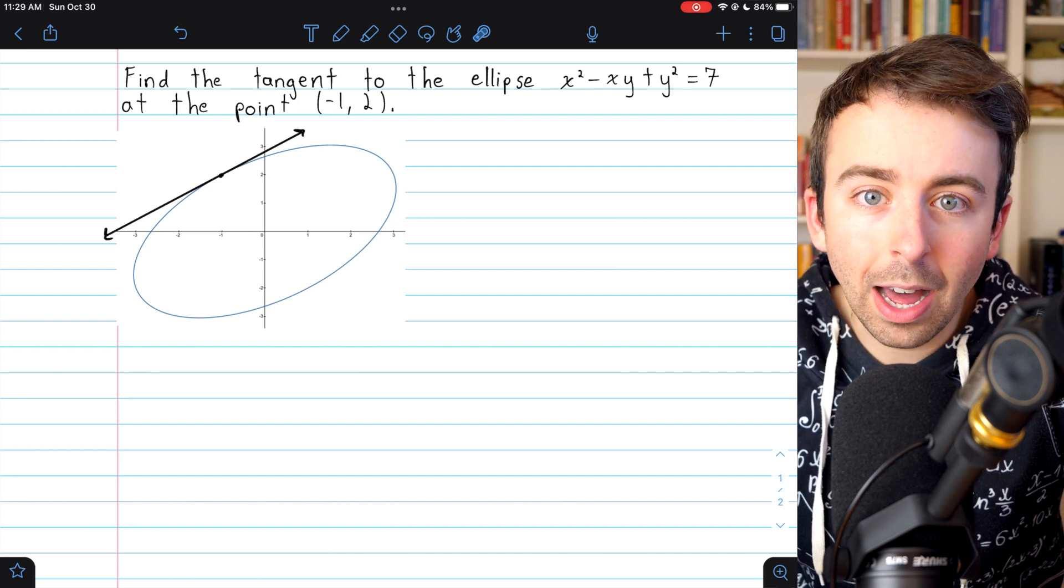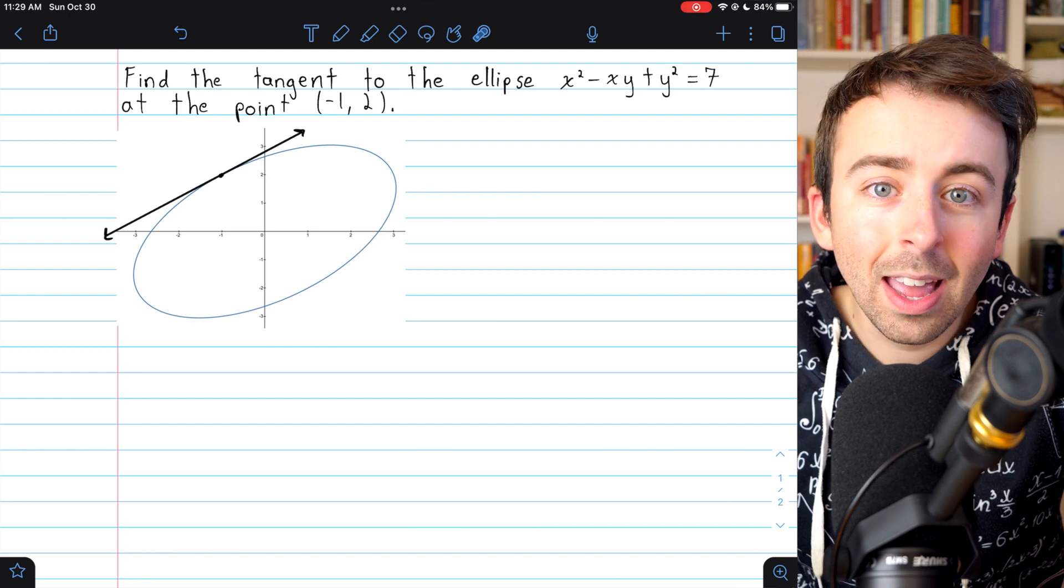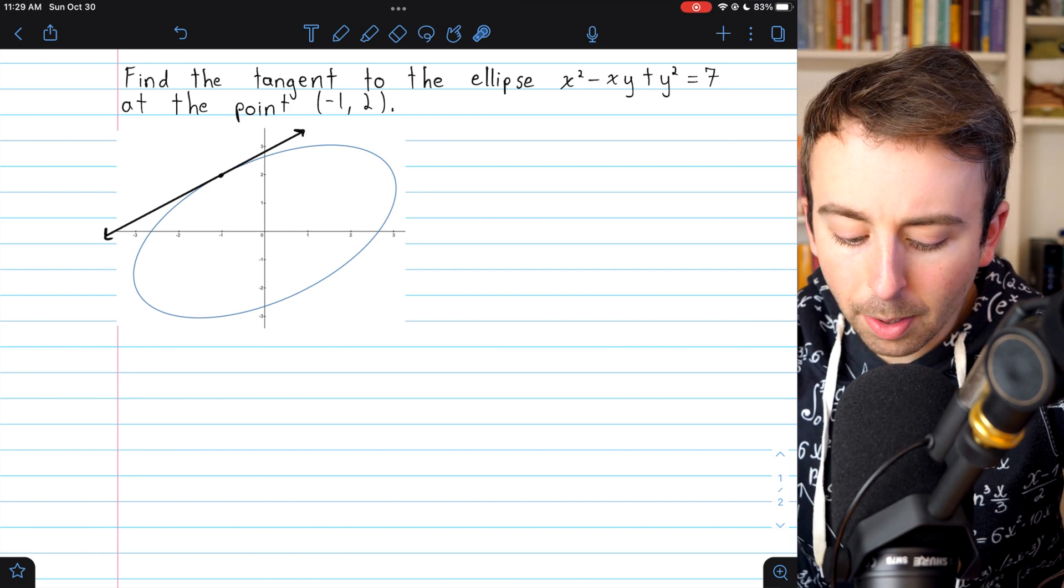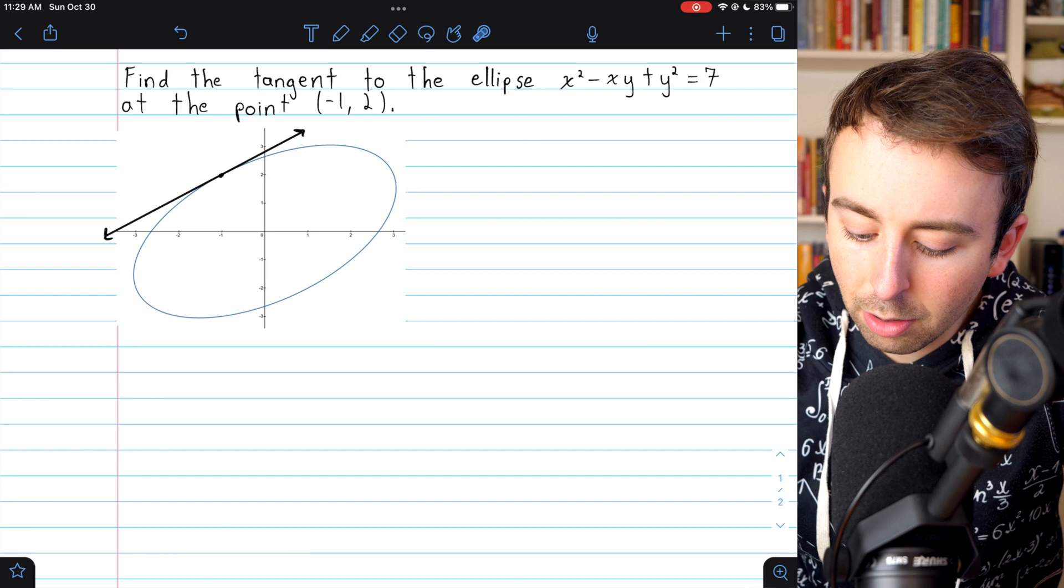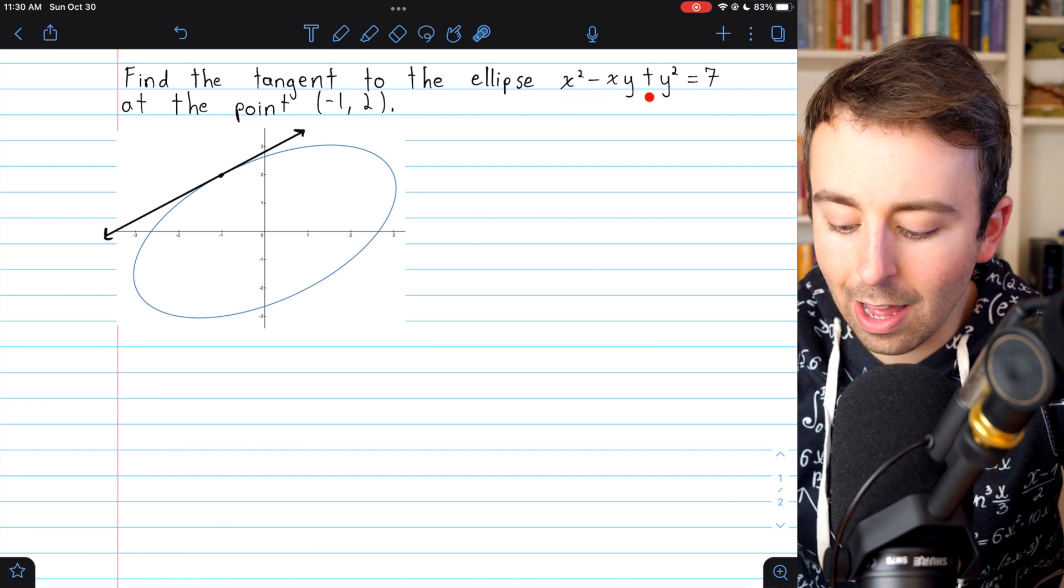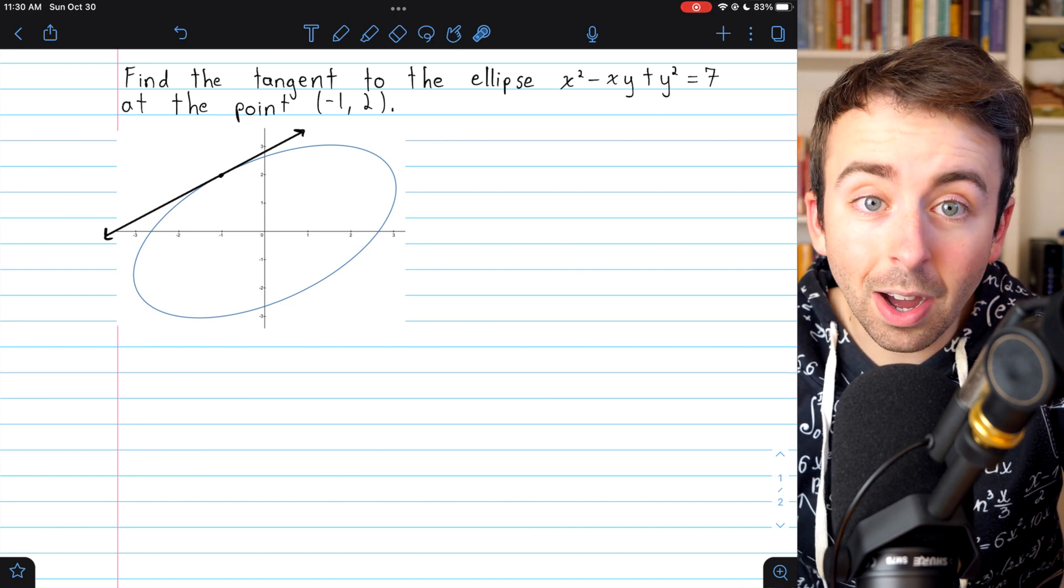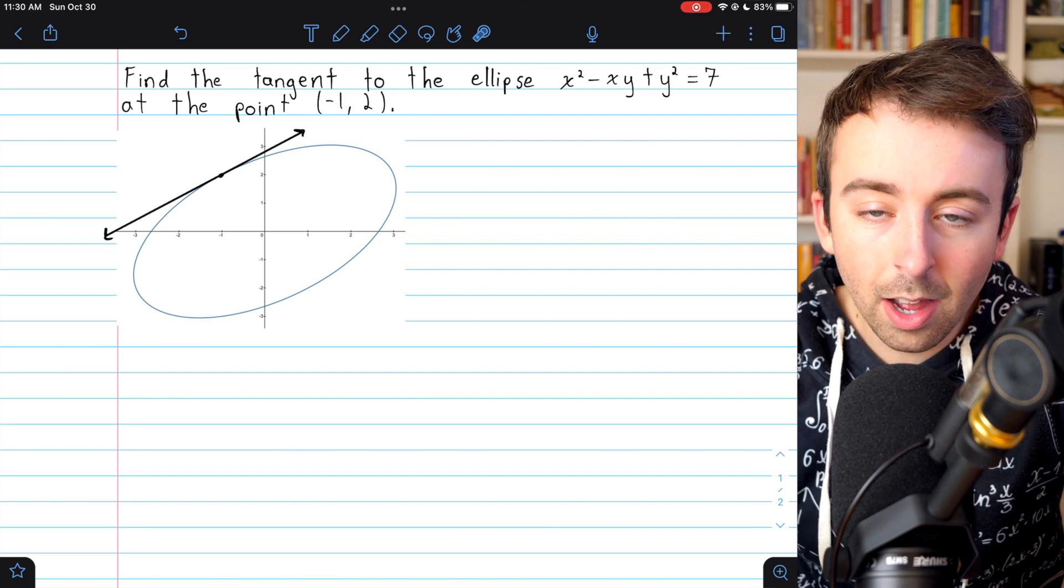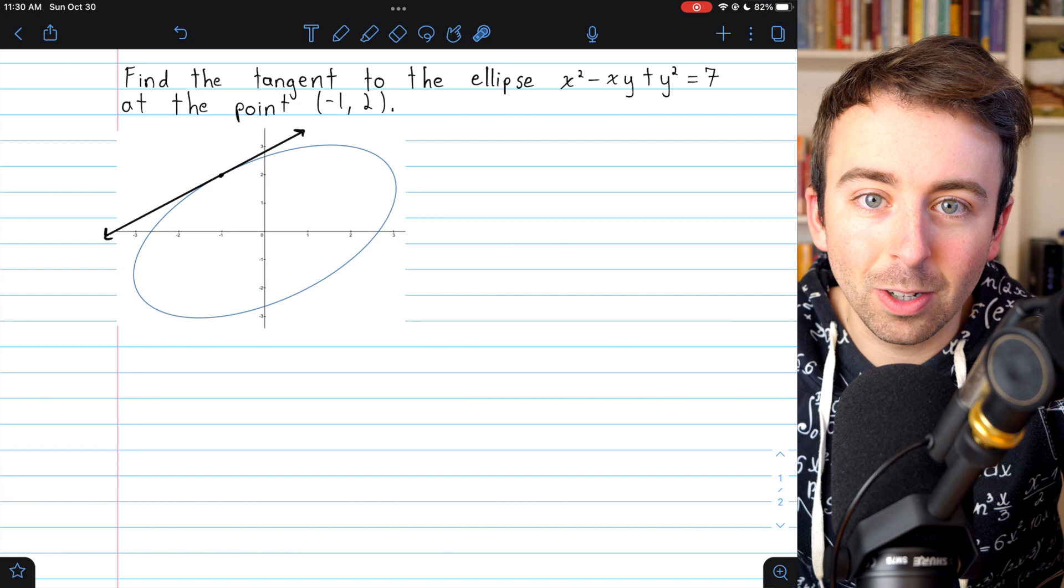So in order to find the tangent line, we'll need to know the slope, and to know the slope, we're going to have to use implicit differentiation. In this problem, we're asked to find the tangent to the ellipse described by the equation x² - xy + y² = 7, and we want to find this tangent at the point (-1, 2). Of course, we need a whole point now to specify where the tangent is going to be.